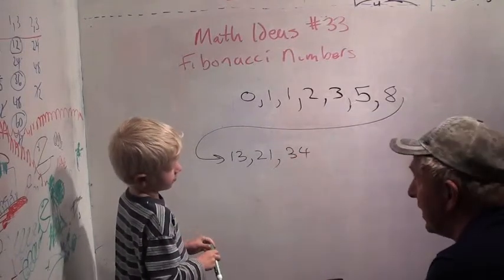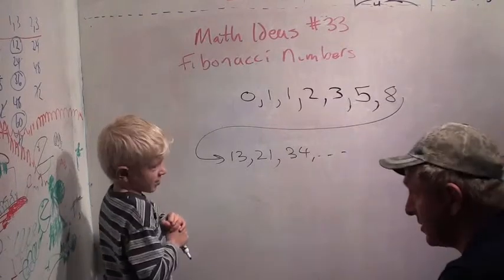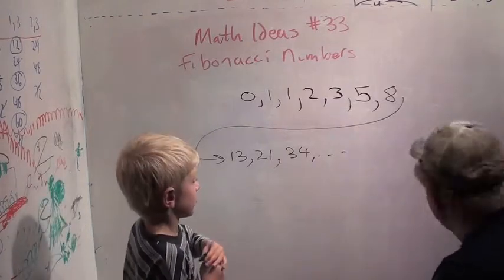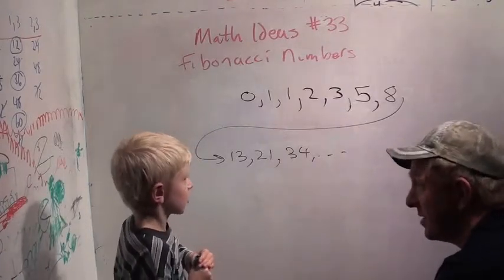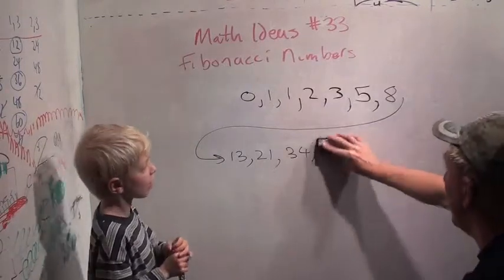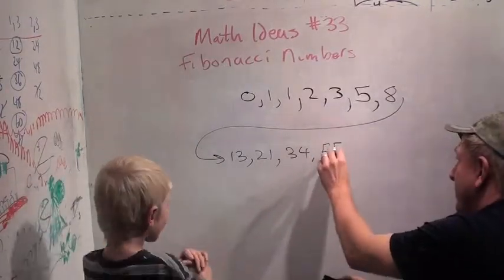Okay. Now, and this keeps on going. You know how long it goes until it stops? No. It never stops. It just keeps going forever. Okay. The next number is fifty-five. Twenty-one plus thirty-four is fifty-five. Fifty-five.